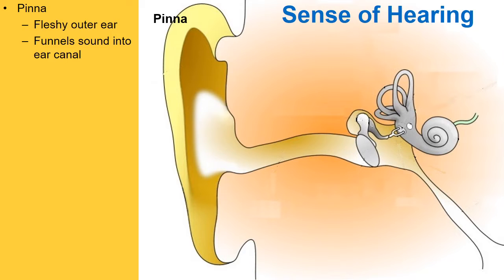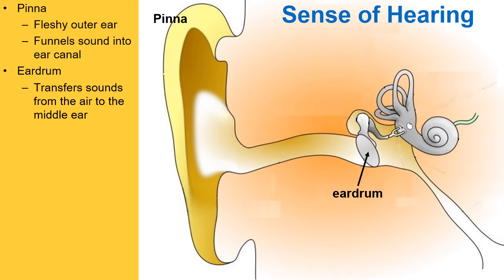Here we have a diagram with the pinna labeled. Moving inward into the ear canal, we come to the eardrum. What the eardrum does is it transfers sound from the air, from the environment, into the middle of our ear.